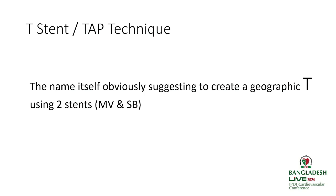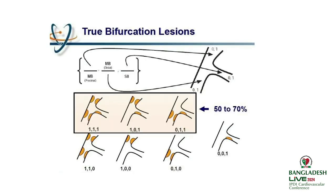T-stent or TAP technique — the name itself is obviously suggesting to create a geographic T using two stents: one in the main vessel, one in the side branch. This is a true bifurcation relation. The three Medina classifications — 1,1,1; 1,0,1; and 0,1,1 — account for 50 to 70% of lesions which require bifurcation stenting.